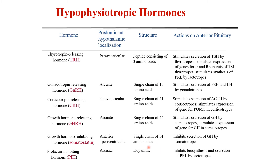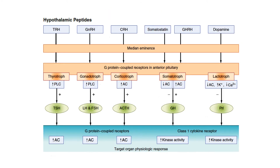All hypothalamic hormones are peptides, with the exception of dopamine, which is a tyrosine derivative or amine hormone. Dopamine has inhibitory action. All the hypothalamic hormones are excitatory and increase the secretory activity of the pituitary gland, with the exception of somatostatin and dopamine, which are inhibitory.